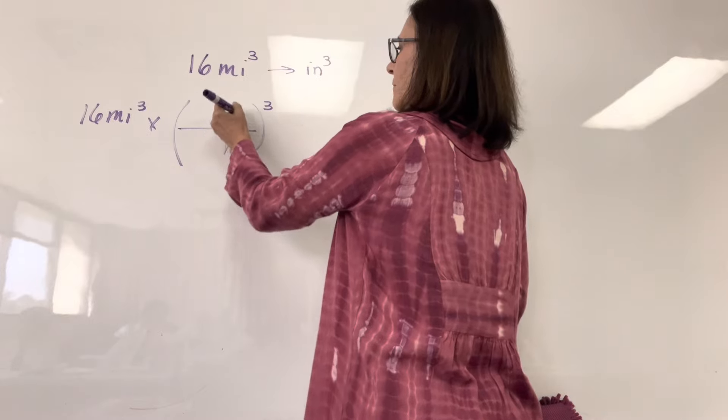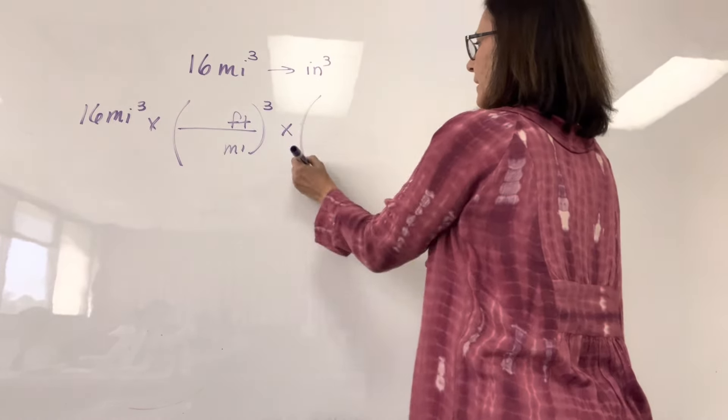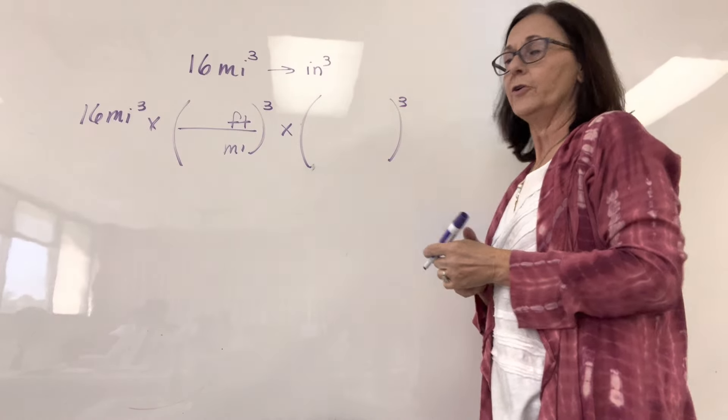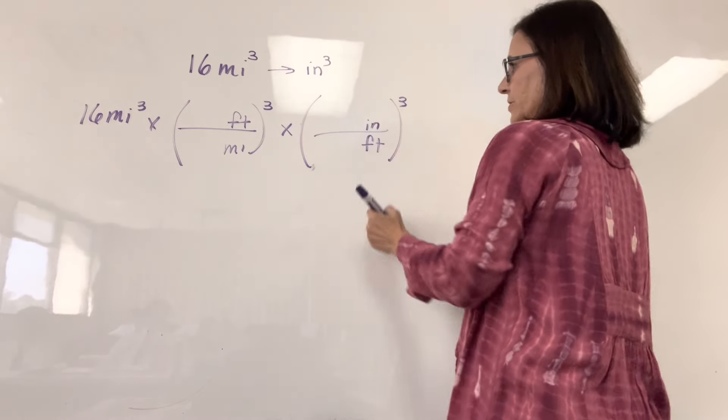But I want miles in the denominator, feet in the numerator, right? 5,280. Then I need another unit multiplier cubed and it's inches to feet, really feet to inches.